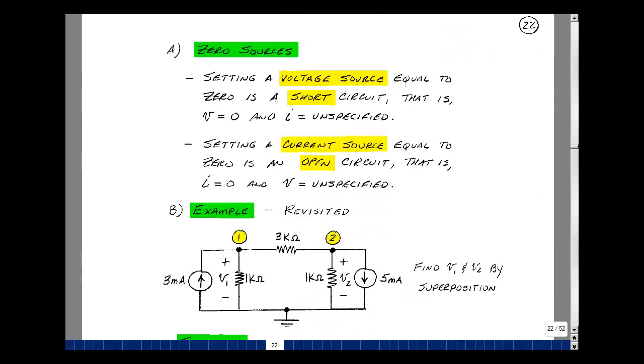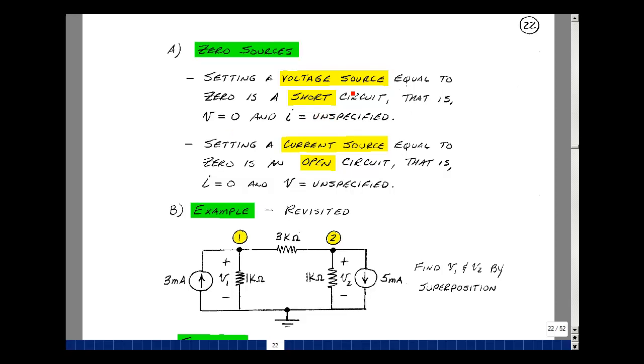In the principle of superposition, we talked about setting sources equal to 0. For a voltage source, we have a specified voltage and an unspecified current. If you set the voltage equal to 0, you still have an unspecified current. But this is our definition of a short circuit. Setting a voltage source equal to 0 is replacing it by a short circuit.